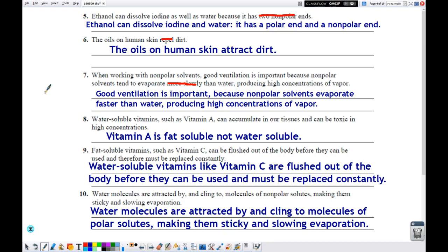Number eight. Water-soluble vitamins like vitamin A. Vitamin A is not water-soluble. It's actually fat-soluble. And because it is not water-soluble, it can build up in our tissues and become toxic in high concentrations. You don't want to take a whole lot of vitamin A. It's bad for you.